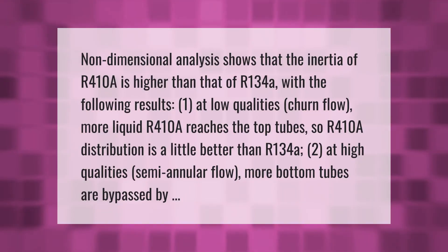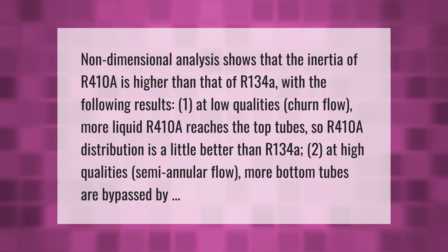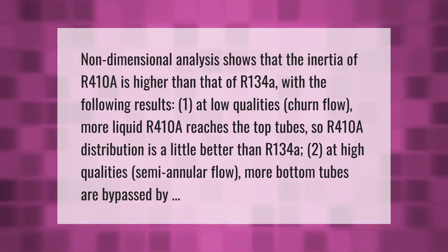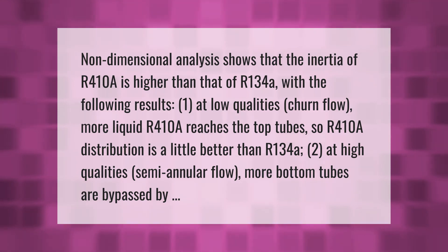Non-dimensional analysis shows that the inertia of R410A is higher than that of R134a, with the following results: one, at low qualities, churn flow — more liquid R410A reaches the top tubes, so R410A distribution is a little better than R134a; two, at high qualities, semi-annular pressure flow — more bottom tubes are bypassed.